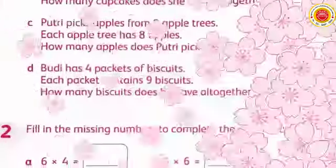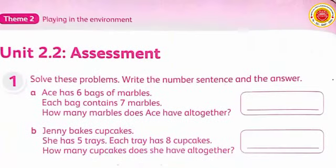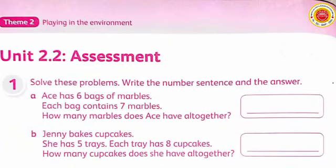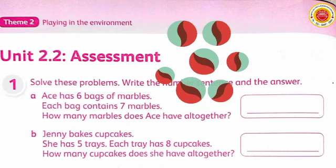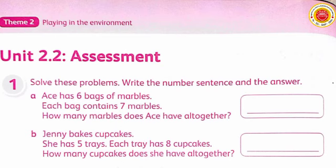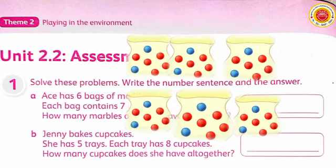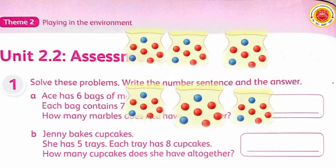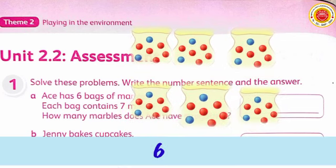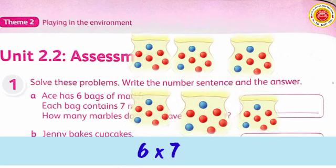Up next, page 20 — Assessment. Solve these problems, write the number sentence, and the answer. A: Ace has 6 bags of marbles, and each bag contains 7 marbles. How many marbles does Ace have altogether? Ace mempunyai 6 tas yang berisi kelereng, dan setiap tas berisi 7 kelereng. So 6 times 7 equals 42.